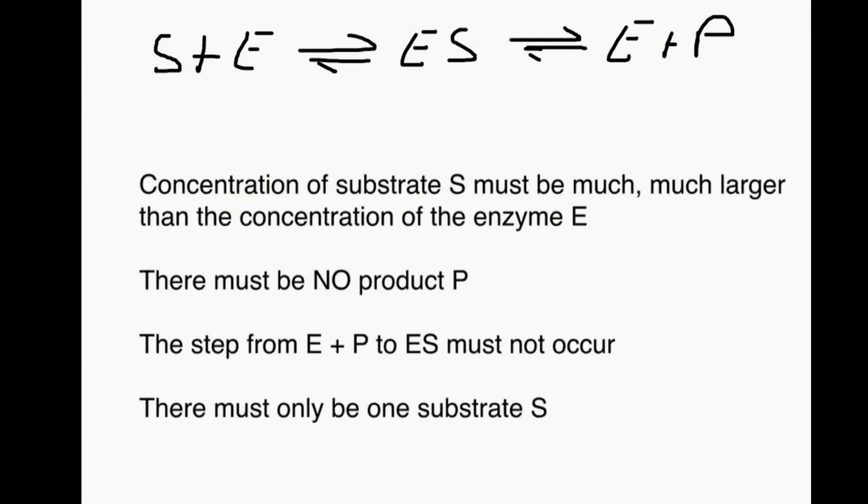Another very important assumption was that there is no product P formed. We cannot have a product P present. We will discuss why this is in more detail when we speak about inhibitors.